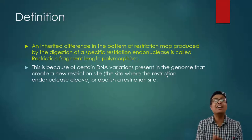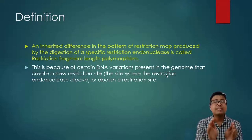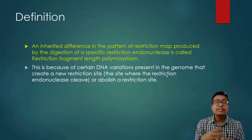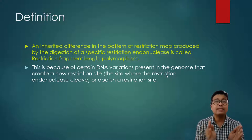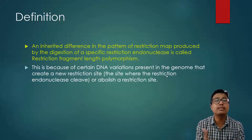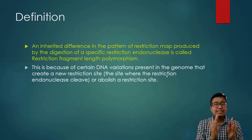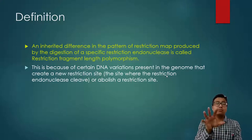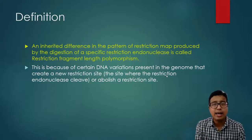Now, why does this happen? This happens because certain DNA variations in the genome can create a new restriction site — the site where restriction endonuclease enzymes act. Either they can change or they can abolish a restriction site. This is the basis of RFLP.